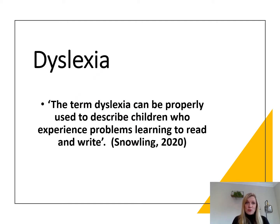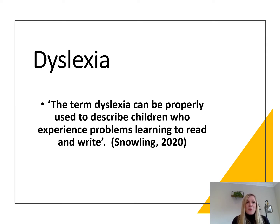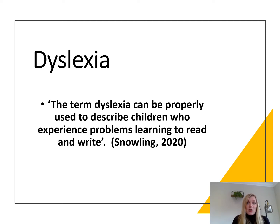Dyslexia has become a really controversial area in psychology, education, and SEND in recent decades — partly because of difficulties coming to an agreement over a definition, and also the criteria by which it can be diagnosed in a scientific and objective manner. It even comes to the point where people at conferences have had fist fights about dyslexia because people feel so emotionally attached to different sides of the argument. Many of the theories and models used to explain dyslexia have been disputed, meaning that all that's really agreed upon is that dyslexia is a term describing children who experience problems learning to read and write. Many people therefore use the terms dyslexia and literacy difficulties interchangeably.